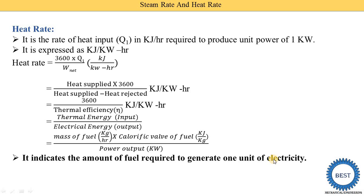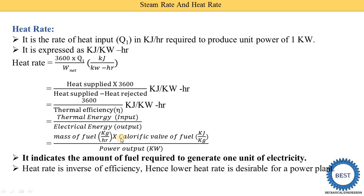Heat rate is the inverse of efficiency, as already discussed. Hence, a lower heat rate is desirable for power plants. If heat rate increases, then efficiency is reduced because heat rate equals 1 divided by thermal efficiency. So if we want to increase thermal efficiency, we need to reduce the heat rate — a lower heat rate is desirable for power plants because reducing heat rate increases efficiency.